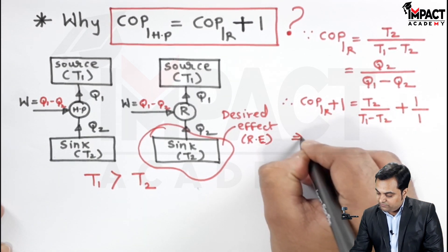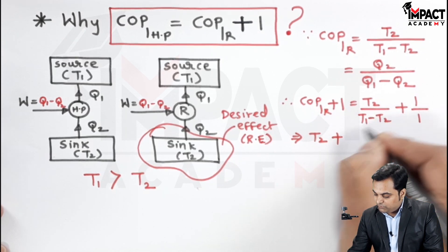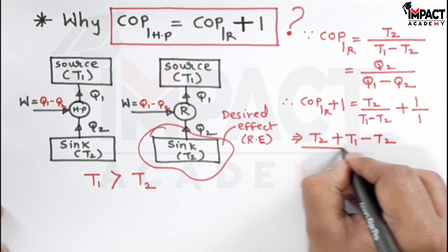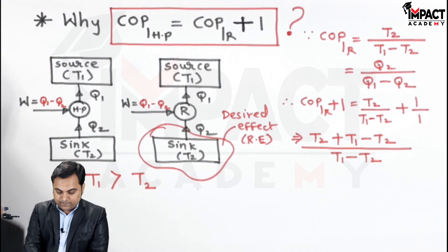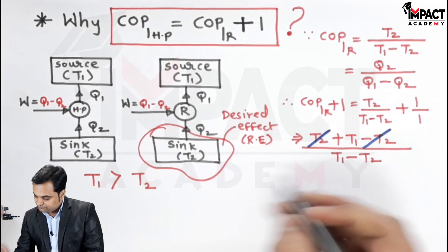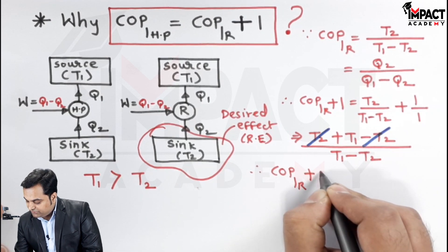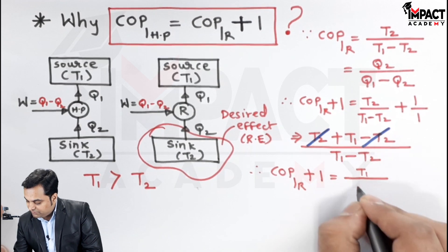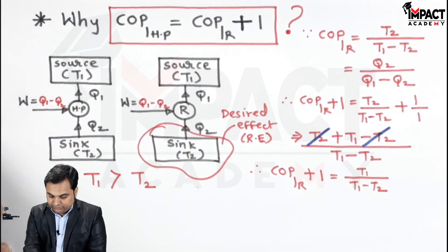Simplifying: T2 / (T1 − T2) + 1 = (T2 + T1 − T2) / (T1 − T2). The T2 terms cancel out in the numerator, giving T1 / (T1 − T2). So COP of refrigerator + 1 = T1 / (T1 − T2).